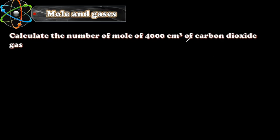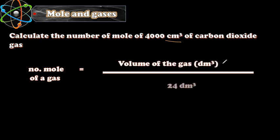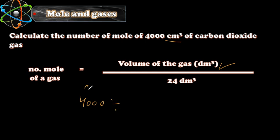But if you have the unit not in dm³ — for example, here we have 4000 cm³ — the rule still requires the volume in dm³. So first we convert: to go from cm³ to dm³, we divide by 1000. So 4000 divided by 1000 gives us 4 dm³.